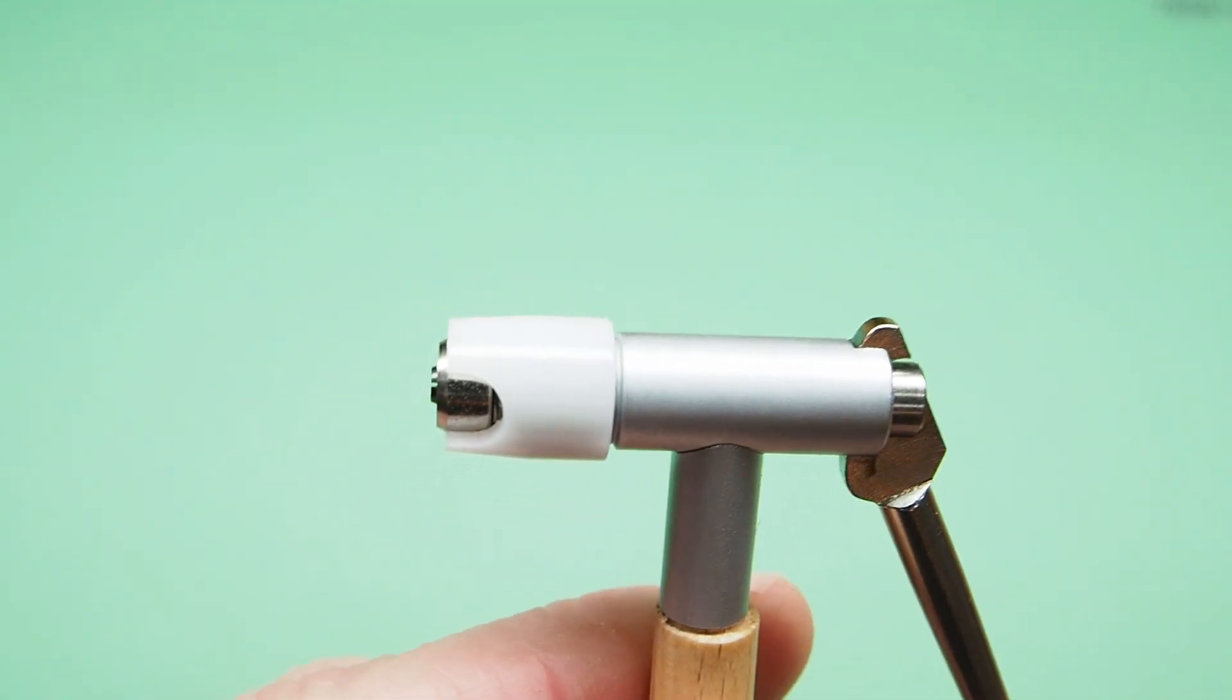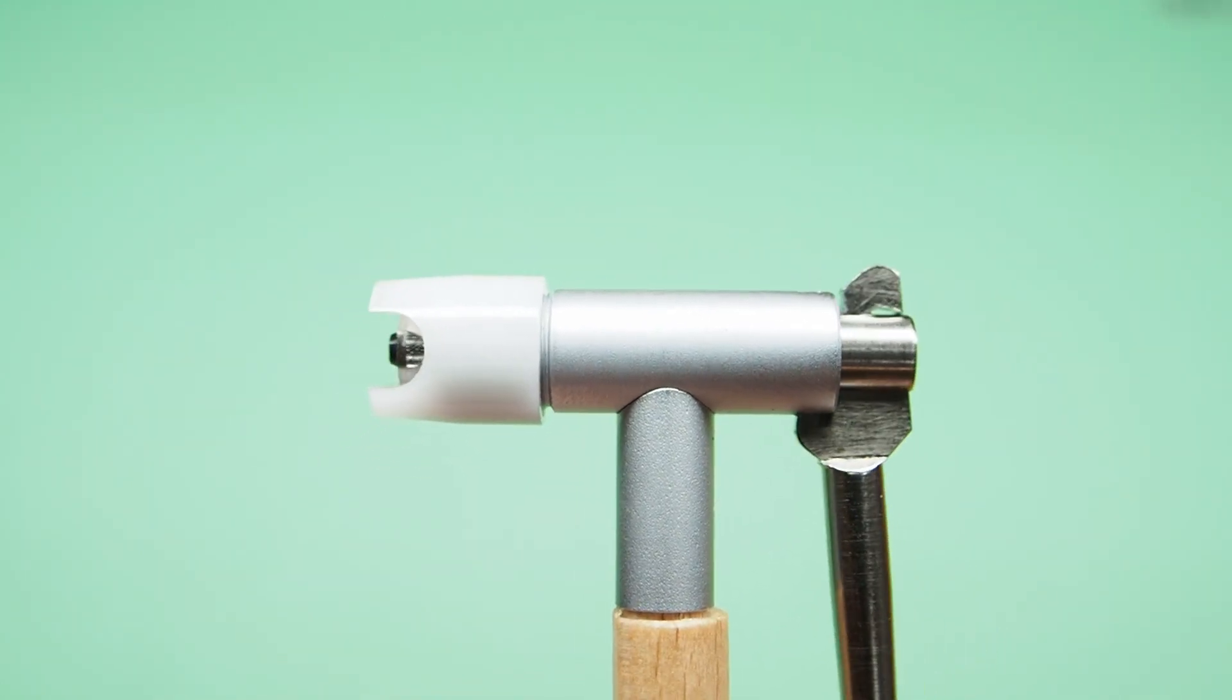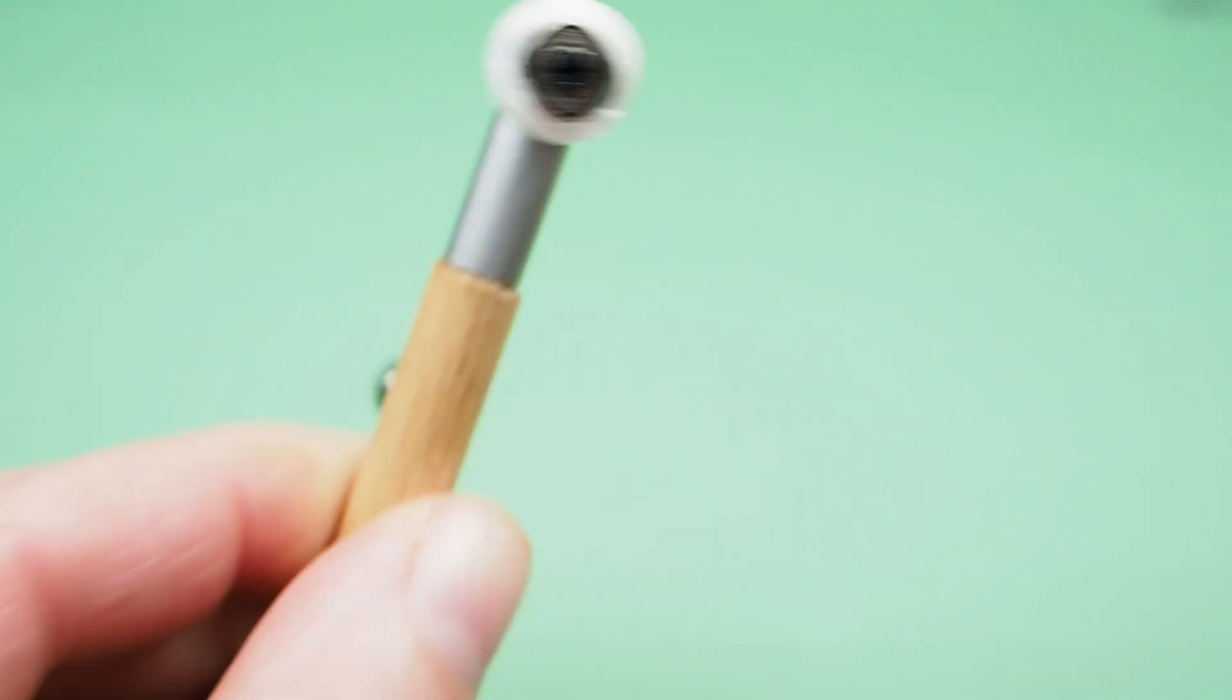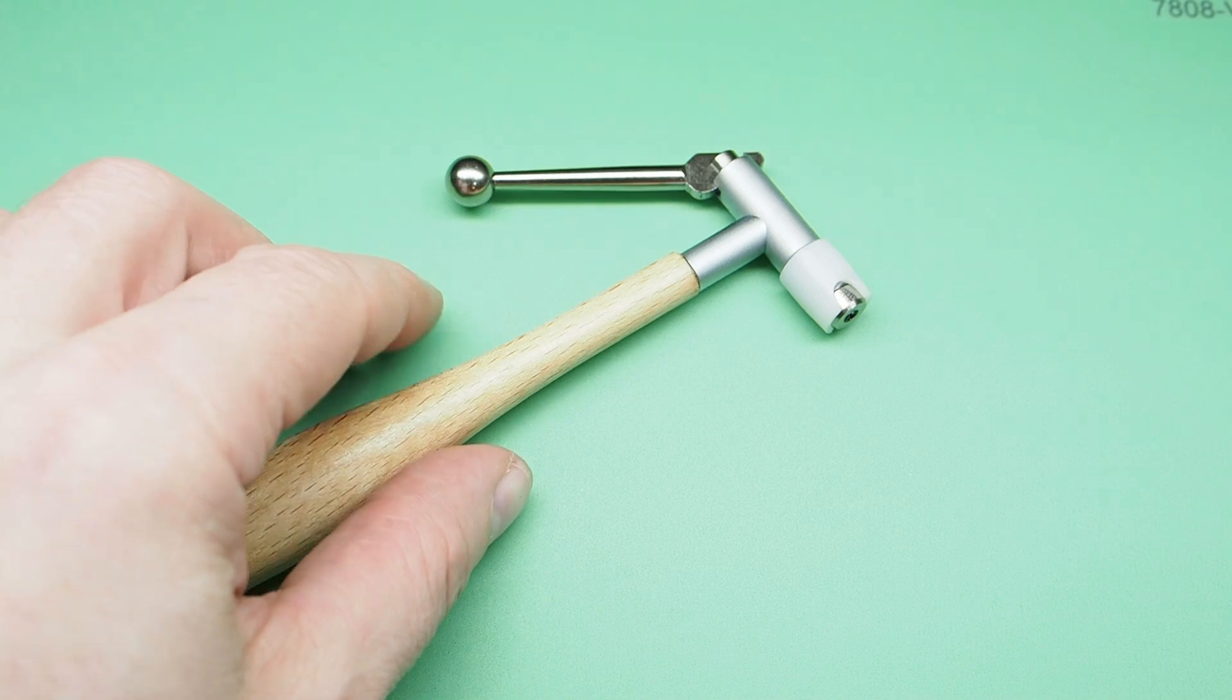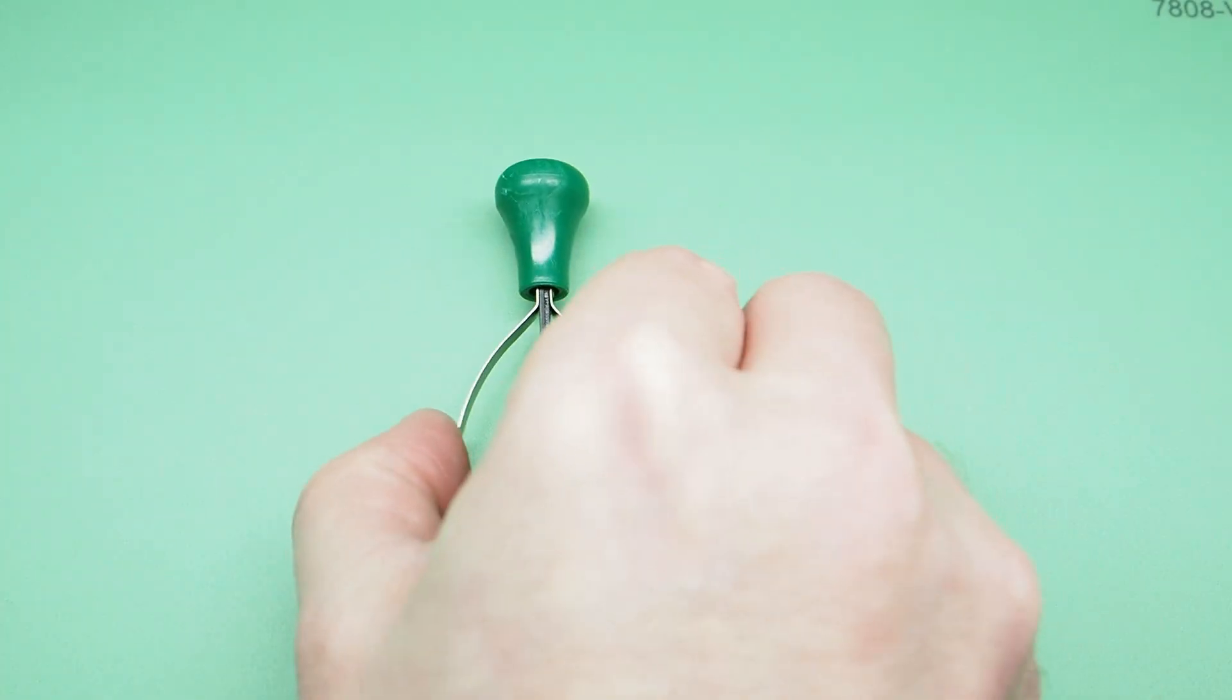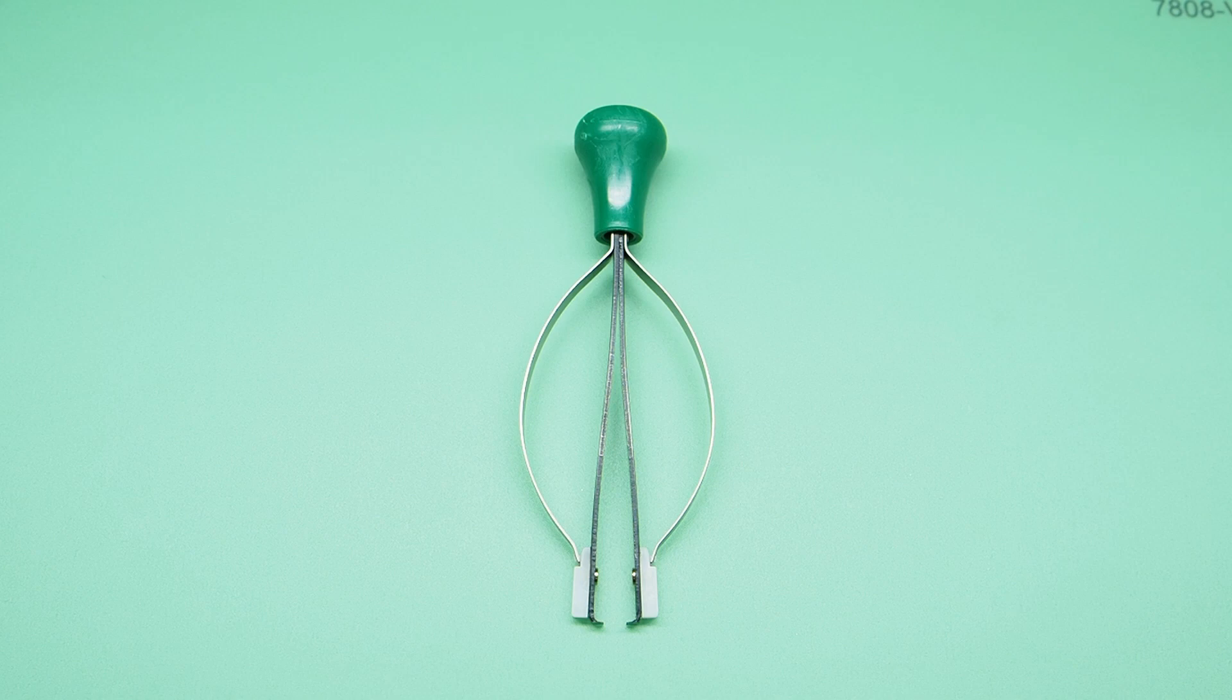Here's our cannon pinion remover. The shaft is also known as the Presto tool. And the purpose of this tool is removing cannon pinions and hands of large watches.